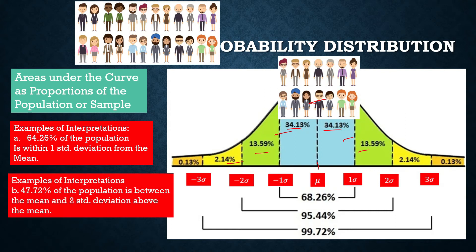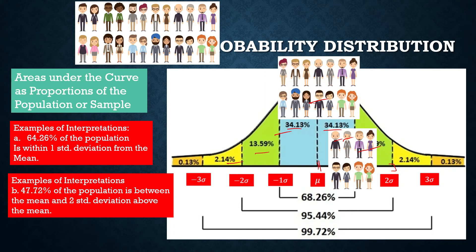Another interpretation: 47.72% of the population is between the mean and two standard deviations above the mean. This comes from adding the two regions between the mean and +2 SD. So if this is our population or sample, 47.72% of them fall from the mean to two standard deviations above the mean.